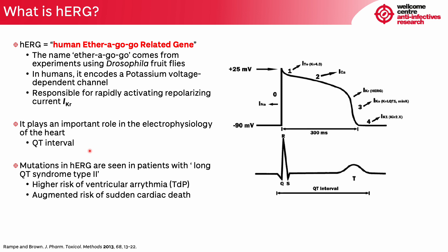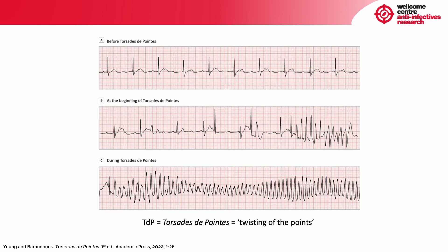Patients with mutations in the HERG gene are correlated with what we call the long QT syndrome type 2, in which this QT interval is longer than normal, and that can cause a higher risk of ventricular arrhythmia, or TDP — twisting of the points — and that can lead to sudden cardiac death. This figure shows what an electrocardiogram would look like before, during, and as the TDP is going on, giving an illustration of how serious dealing with the HERG channel is.